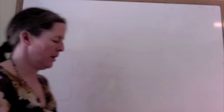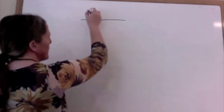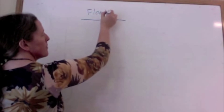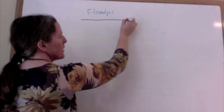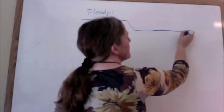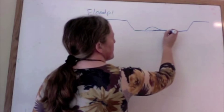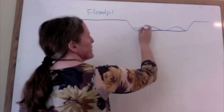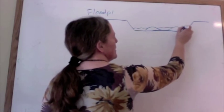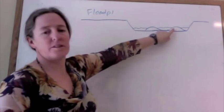If we look at a cross-section of a braided river, what you see is a floodplain, and then you have the main river channel here. This is where you have the bars, and during low flow you have multiple channels with the bars sticking above.